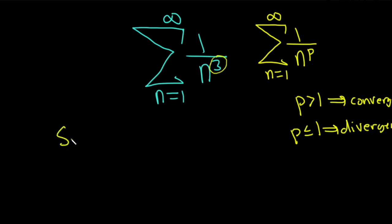So you would just say, since p equals 3, which is greater than 1, our series converges. You could say it's a convergent p series. I'll say converges by the p test.